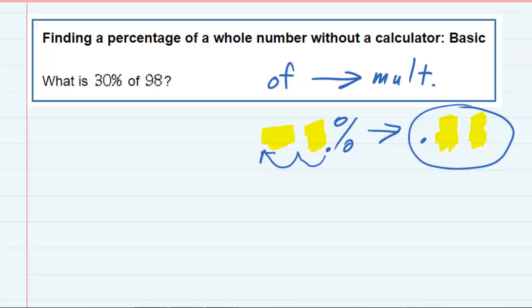So if we start back with our problem, whenever I see the 30%, I want to convert that percentage to a decimal. And it says I have to move the decimal two places to the left. So that becomes .30. Notice we've dropped the percent sign.